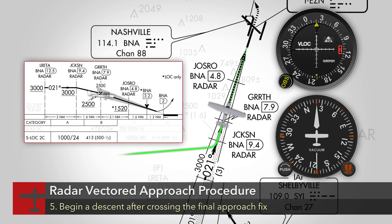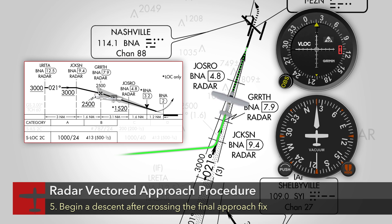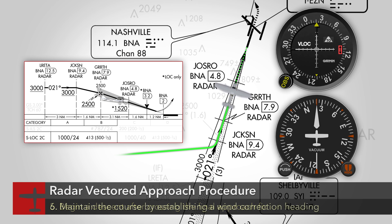After crossing the final approach fix, initiate a descent as required for the type of approach you are flying. Adjust the pitch and power as necessary to maintain the proper rate of descent and airspeed. Maintain the course by establishing a wind correction heading.